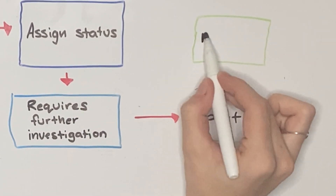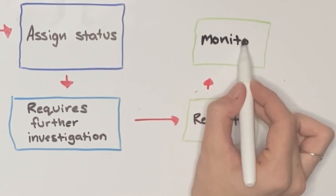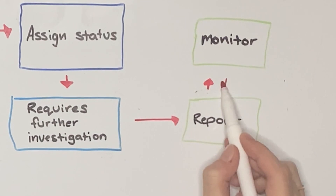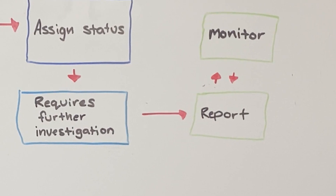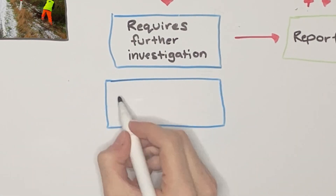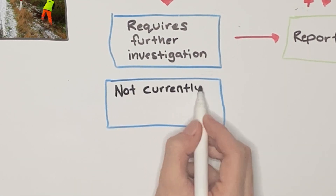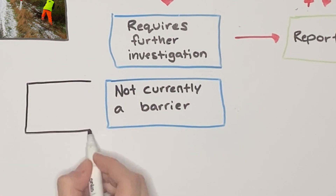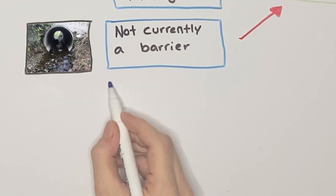All structures can then have ongoing monitoring to make sure they are still fish friendly and any fish passes fitted are still okay. Or, not currently a barrier — if there is a structure but it is not a fish barrier, then it is monitored over time to ensure it remains fish friendly.